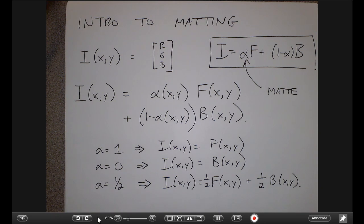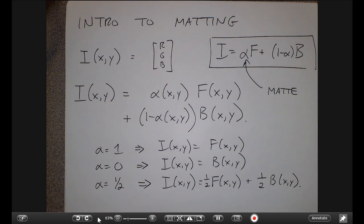The image I is a full RGB image. F and B are also full RGB images, and alpha is a grayscale image that tells me between zero and one how to mix those two things together. Those of you who have taken computer graphics are probably used to seeing this alpha in the context of the alpha channel, used when putting layers of material on top of each other. We'll talk about that when we discuss compositing — once we've got these pieces, how do we put them back together?